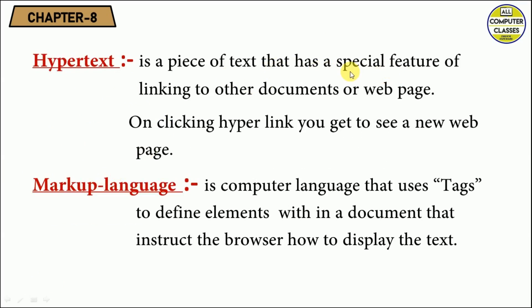The next term is hypertext. Hypertext is a piece of text that has a special feature of linking to other documents or web pages — 'hyper' means linking. When you search something on the internet and move your mouse pointer over a result, the pointer changes into a hand sign, which indicates a hyperlink. When you click a hyperlink, it opens another web page.